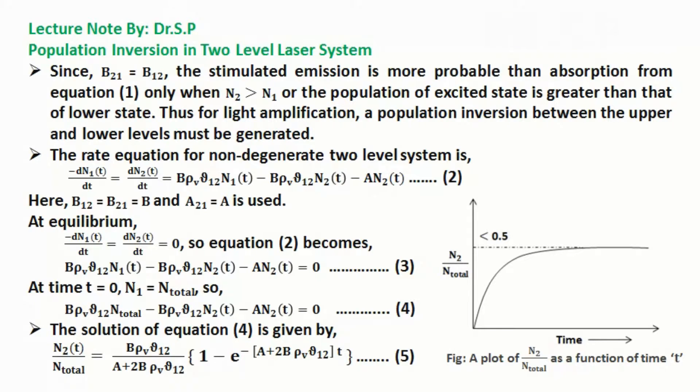The rate equation for non-degenerate two-level system is clearly mentioned in equation 2. Here, B12 equals B21 equals B, and A21 equals A is used. Here, A21 is Einstein coefficient for spontaneous emission.